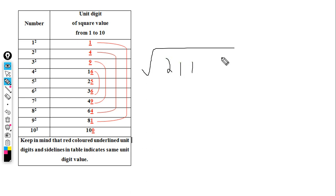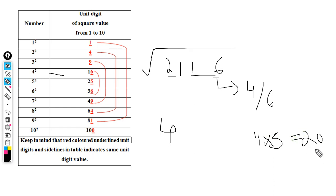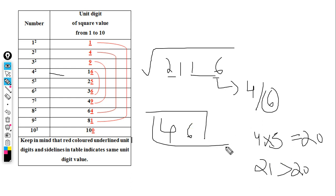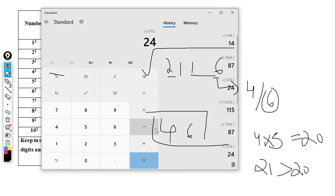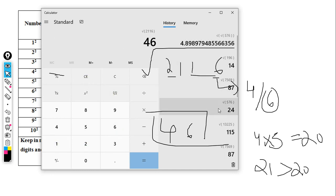Let's take the example of 2116. The unit digit is 6, so the answer ends in 4 or 6. The remaining part is 21, which is nearest to 4² = 16, so 4 is the base. The next number after 4 is 5, and 4 × 5 = 20. The obtained number 20 is less than the given number 21, meaning 21 is greater, so we take the higher unit digit — 6. The answer is 46. Verified in calculator: square root of 2116 is 46. Correct!